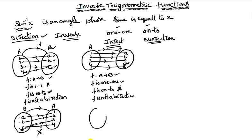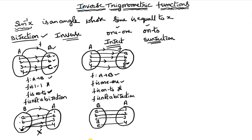Now discussing the function from B to A: set B has elements a, b, c, d, e and set A has elements 1, 2, 3, 4. Here a connects with 1, b with 2, c with 3, and e with 4. But element d has no association. According to the definition of a function, every element must have a correspondence — so B to A is not a function.